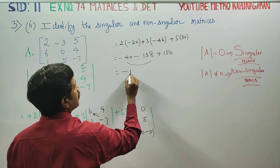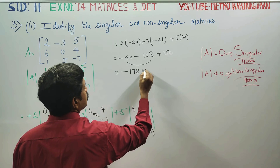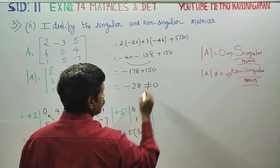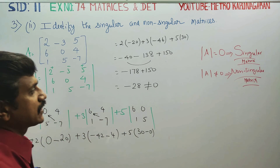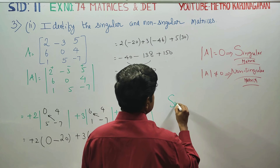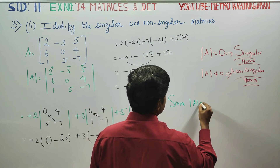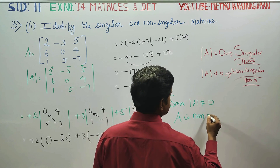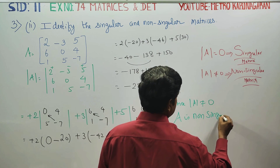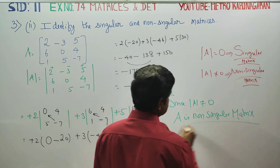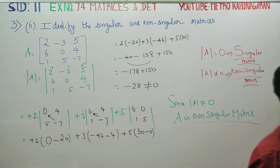Now you can add: minus 178 plus 150 — the answer is minus 28. This is not equal to 0. Now, if determinant A is not equal to 0, it is called a non-singular matrix. Since determinant of A is not equal to 0, A is a non-singular matrix. Non-singular matrix means determinant A is not going to be 0. It is called a non-singular matrix.